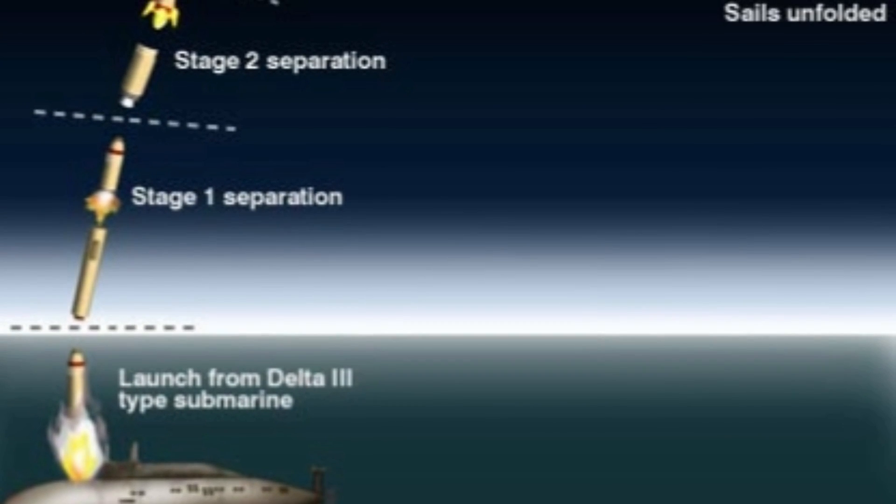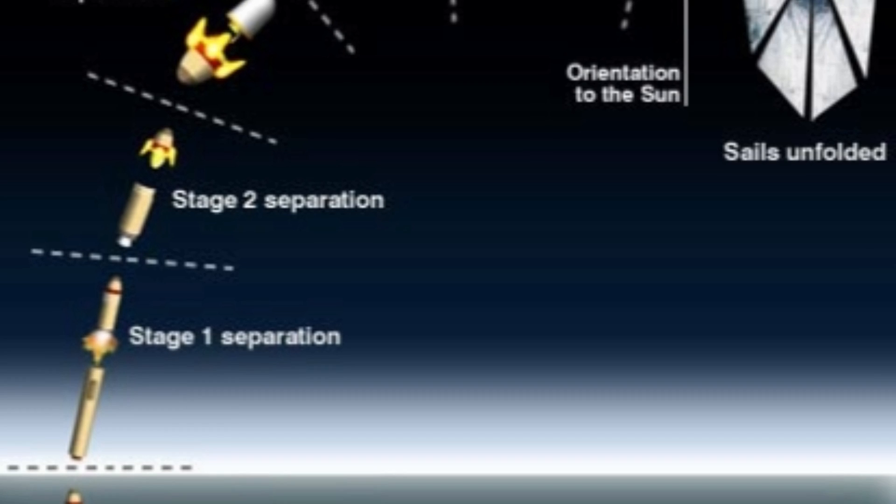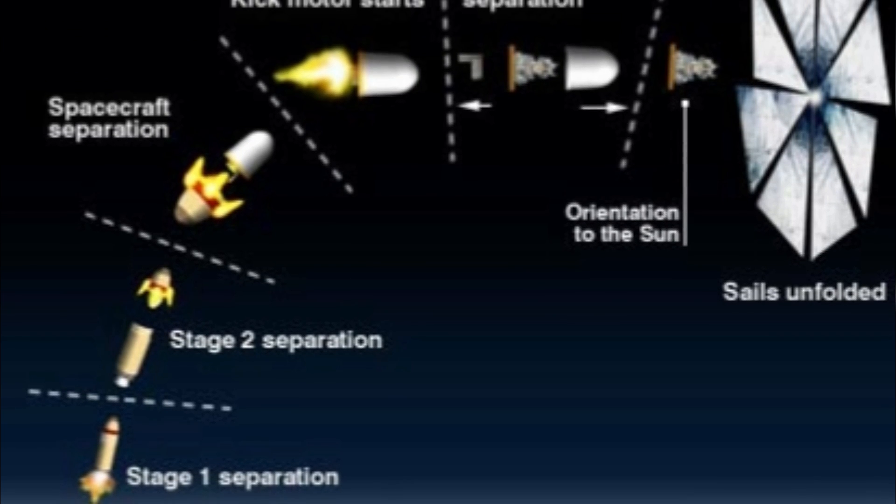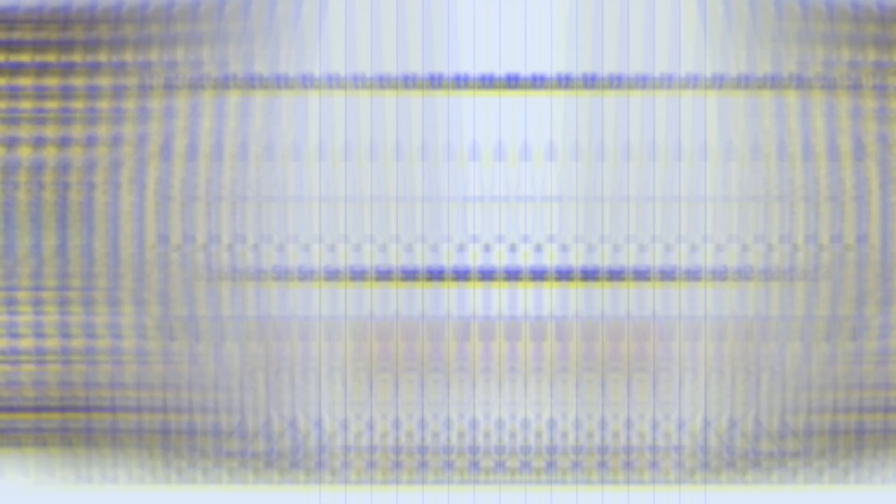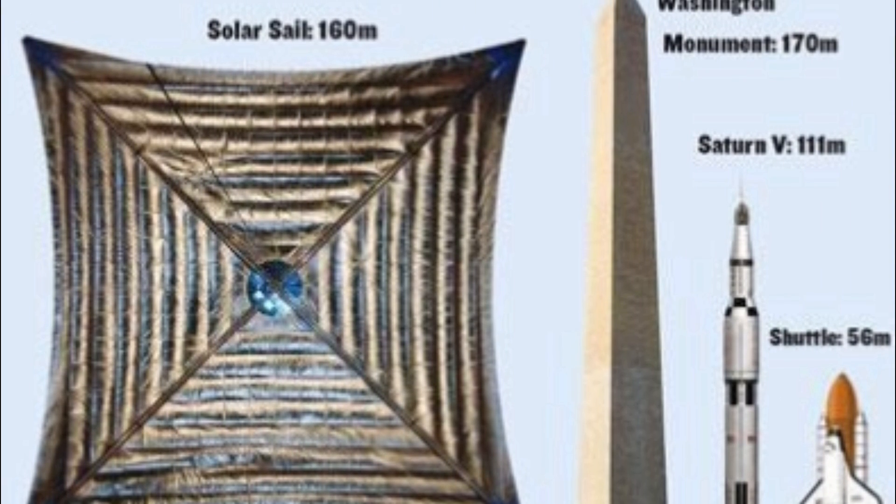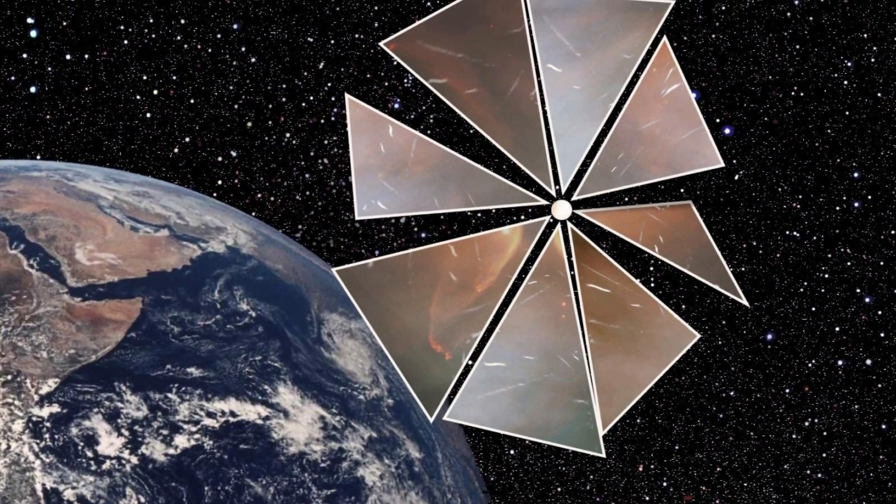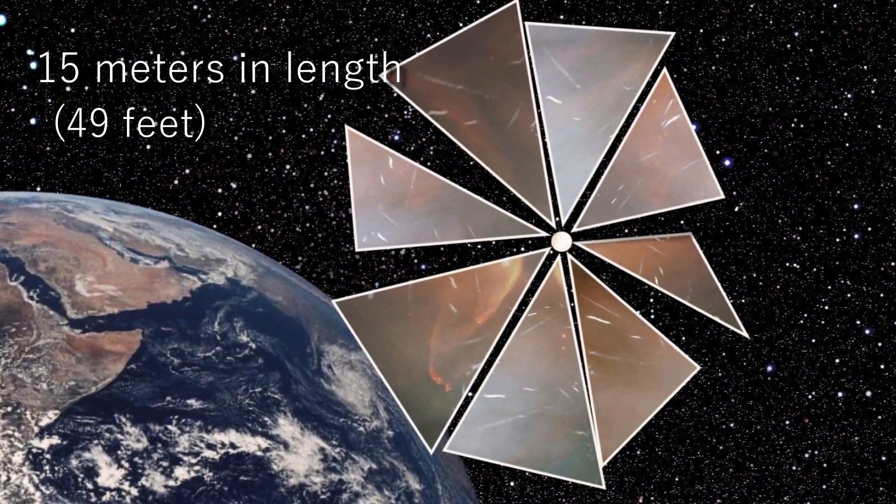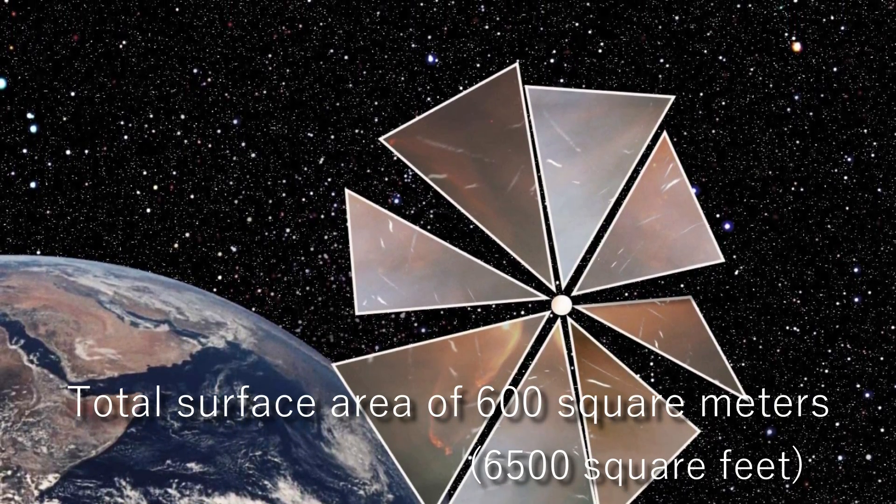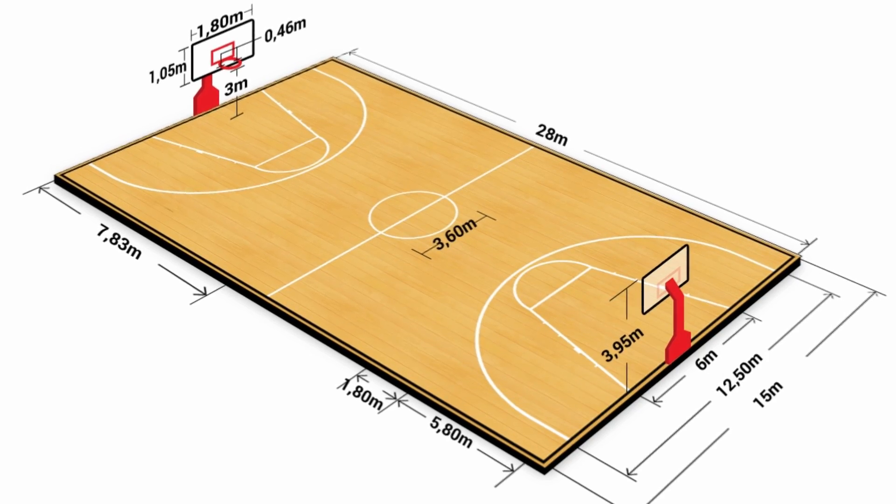Our Cosmos-1 spacecraft, which was lost due to a Russian rocket failure in 2005, was a small solar sail intended only for a short mission. Nevertheless, its sails were 10 stories tall, as high as the rocket that launched it. Its eight triangular blades were 15 meters in length and had a total surface area of 600 square meters. This is about one and a half times the size of a basketball court.